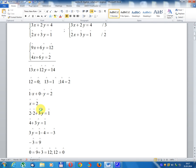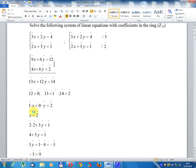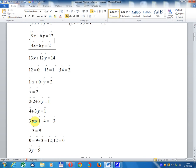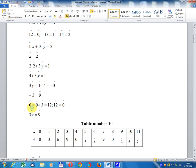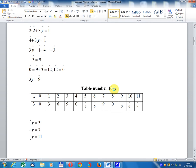Substituting into the first equation: 2·2 + 3y = 1, so 4 + 3y = 1. 3y = 1 - 4 = -3 = 9 (since -3 = 9 in mod 12). Using table number 10, 3y = 9.